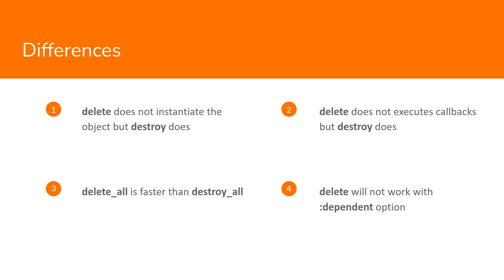The delete method simply returns the number of rows deleted. For example, if you delete multiple rows it returns how many rows were affected in the database, and if you delete a single record it returns that only one row was affected. The delete method is more efficient than destroy because it does not instantiate the record and does not execute any callbacks or filters.